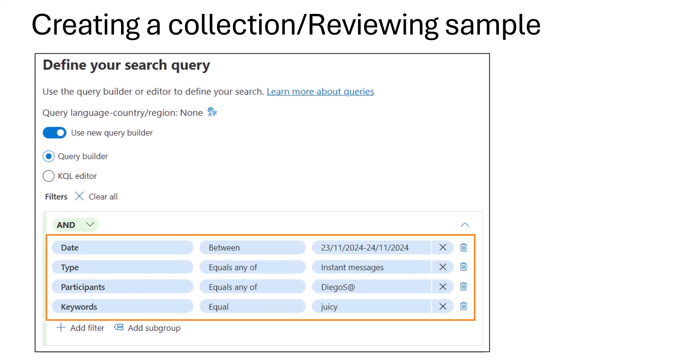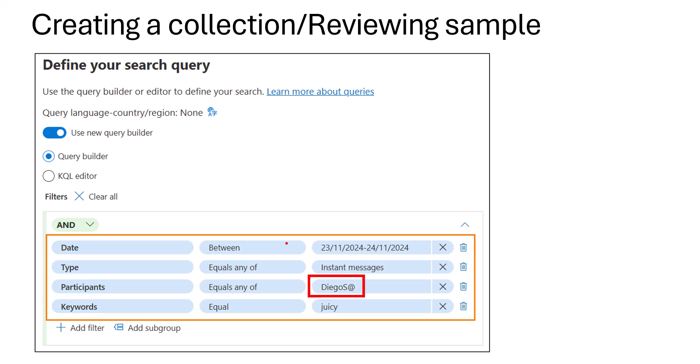The next stage is to create a collection and review the output. We're defining our search query. For Teams messages, you have a date condition — since we know it was sent on the 23rd of November, the date range is 23rd to 24th November. You apply a type condition filter of 'instant messages,' add Diego as a participant, and use 'juicy' as the keyword.